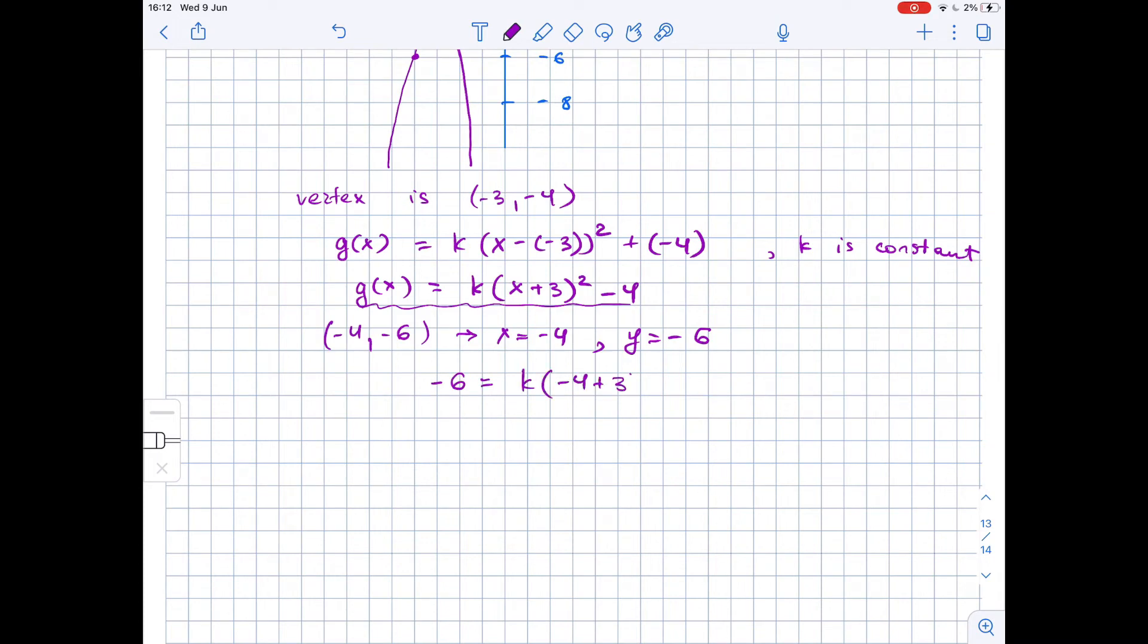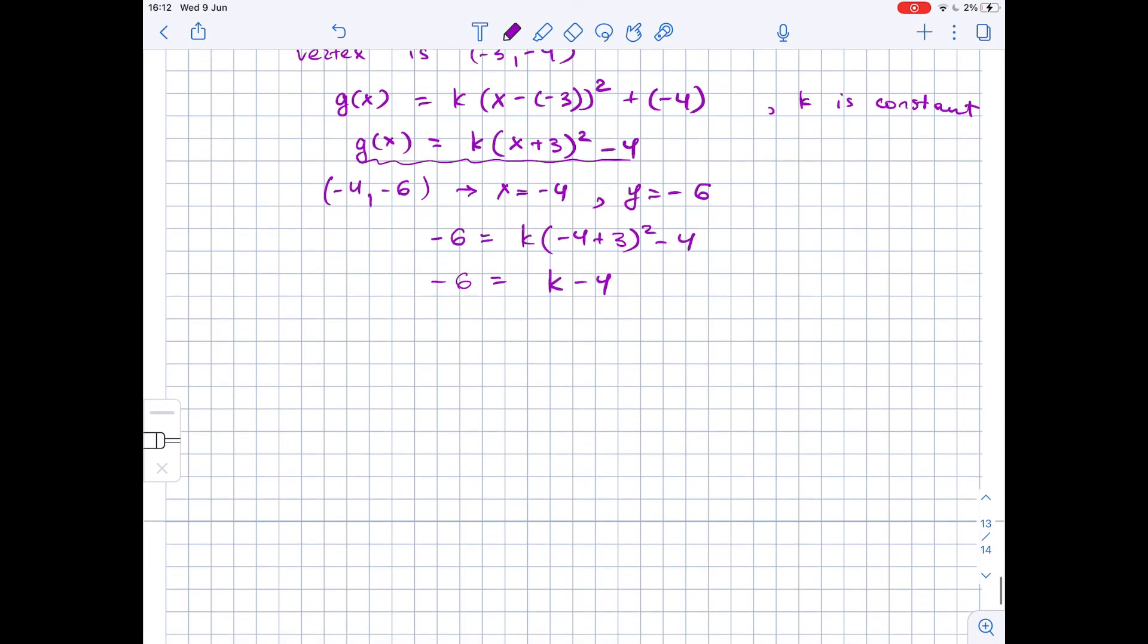Let's simplify it: -6 is equal to... -4 + 3 is -1, -1 squared is 1, so it will be just k minus 4. That means that k is equal to -6 + 4, which is -2.